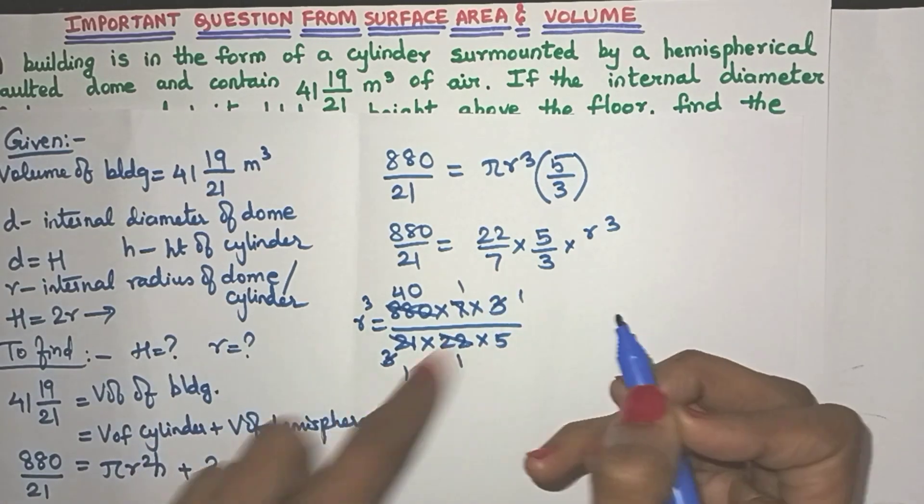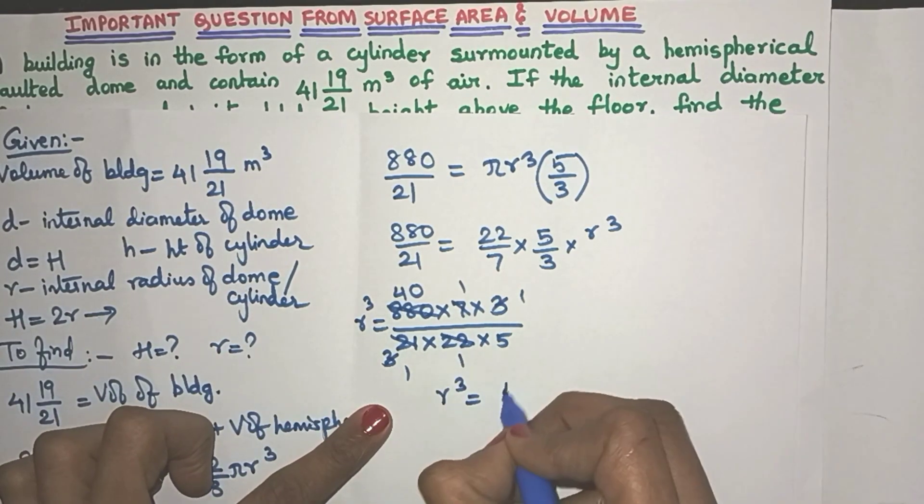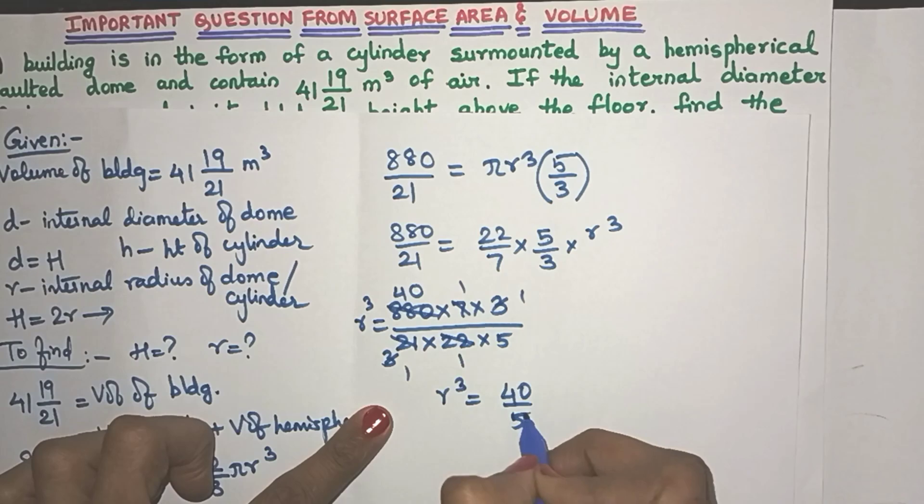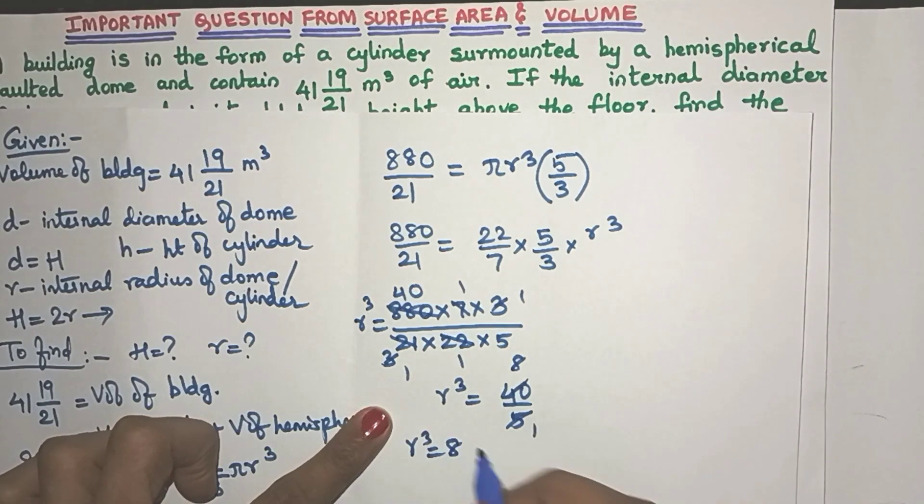So now I have R cube equal to 40 by 5. Again, this will get cancelled. So R cube is 8. So cube of which number gives you 8?